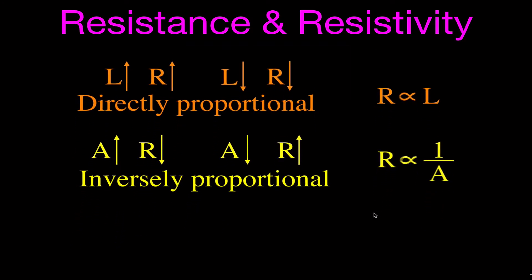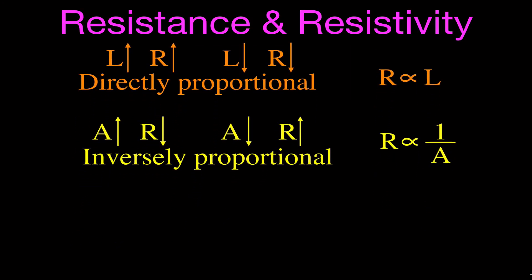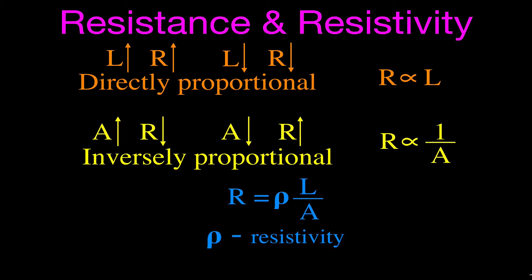Let's use this information to come up with an equation for the resistance. Because the length is directly proportional and the area is inversely proportional to the resistance, we can say the resistance equals L divided by A — the length divided by the cross-sectional area. There is one other factor we haven't considered: the material the wire is made of. Each wire has a different value called the resistivity, represented by the symbol rho. This is a constant of proportionality, and every material — kind of like density — has a different resistivity.